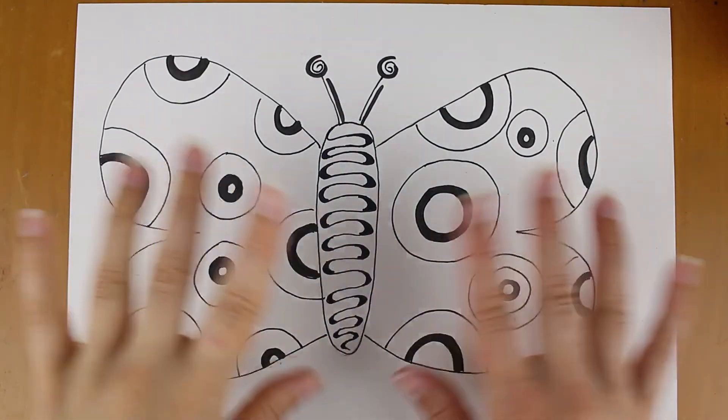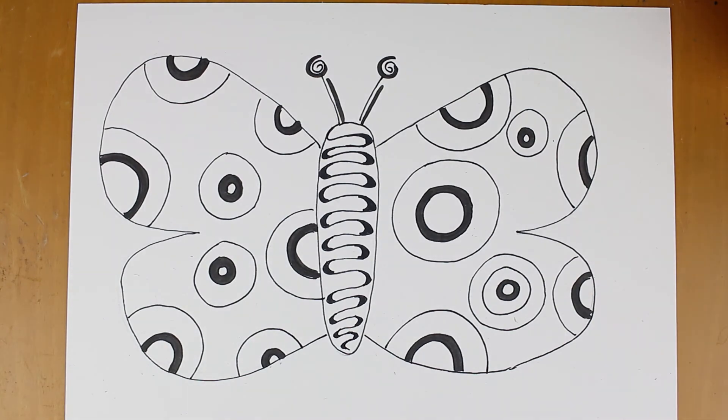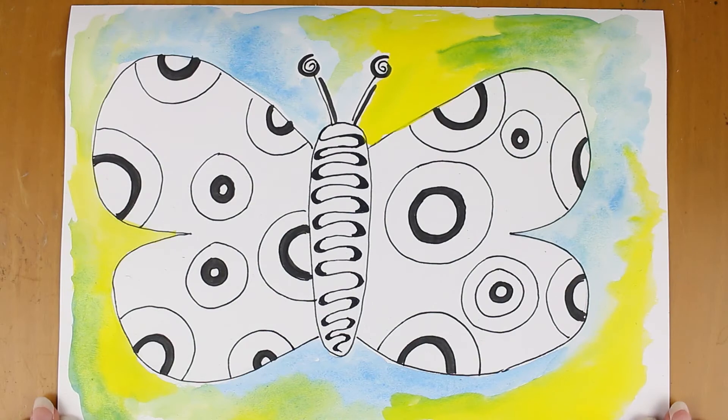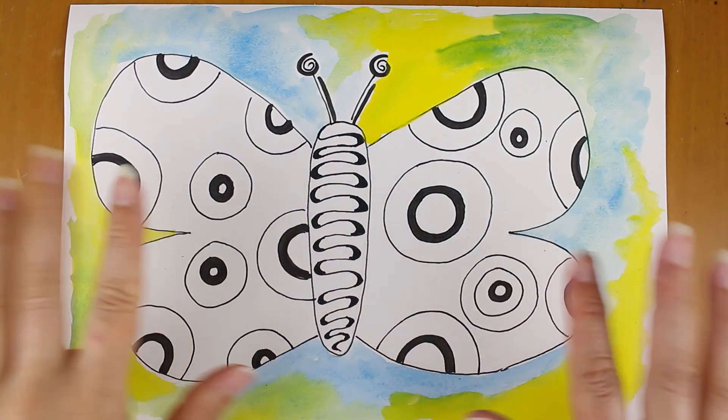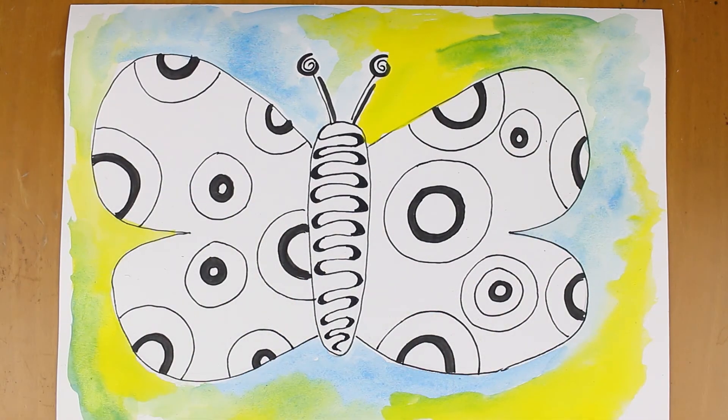There you go, there's my black and white butterfly. I don't think I want to add color to this butterfly. I think I'm just going to keep it black and white. I could put some color in the background, for example. Let's change the background. Three, two, one. There you go, I've changed the background as well.